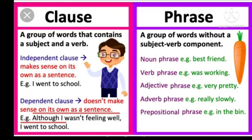You might be thinking: what is a clause? I am going to explain about clauses before going into detail about the types of sentences. Both clauses and phrases are a part of a sentence. But we have to specifically focus on clauses. A clause is a group of words that contains a subject and a verb. That is called a clause.